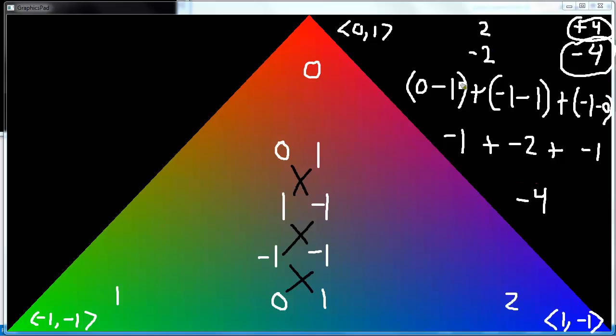But as far as the hardware is concerned, the hardware only cares about the sign. If the sign is negative, then the triangle is facing away. If the sign is positive, the triangle is facing towards us.